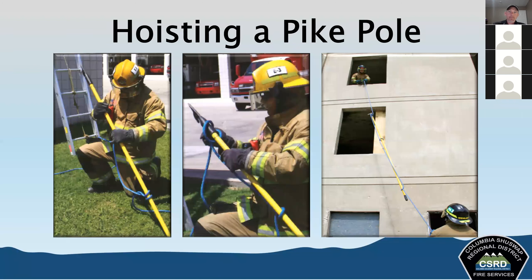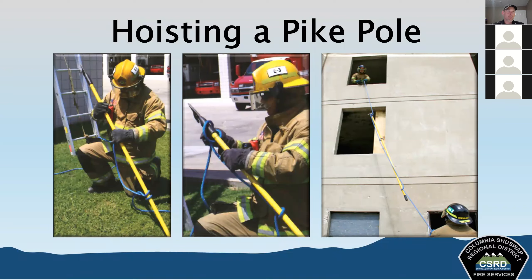For hoisting a pike pole, this is important to know — somebody working on a second story may need one. When hoisting a pike pole, raise it with the head up so it doesn't become a spear falling down on your comrades below. Tie a clove hitch somewhere near the butt end of the handle, then another around the head. In the photo shown, they've done the clove hitch at the head with two half hitches going up the handle, leaving enough room on the running end to act as a tagline to prevent the pike pole from smashing against the building.